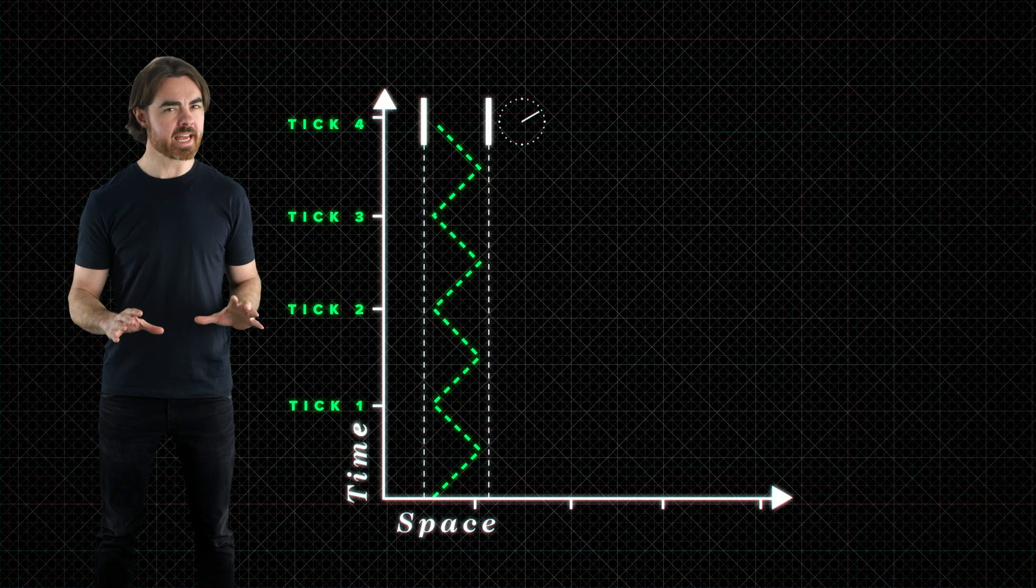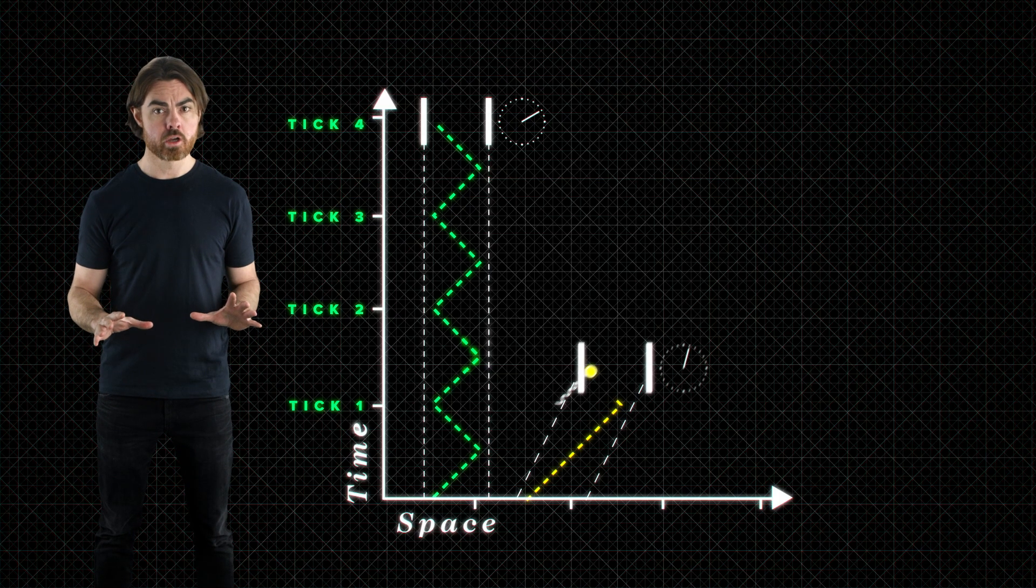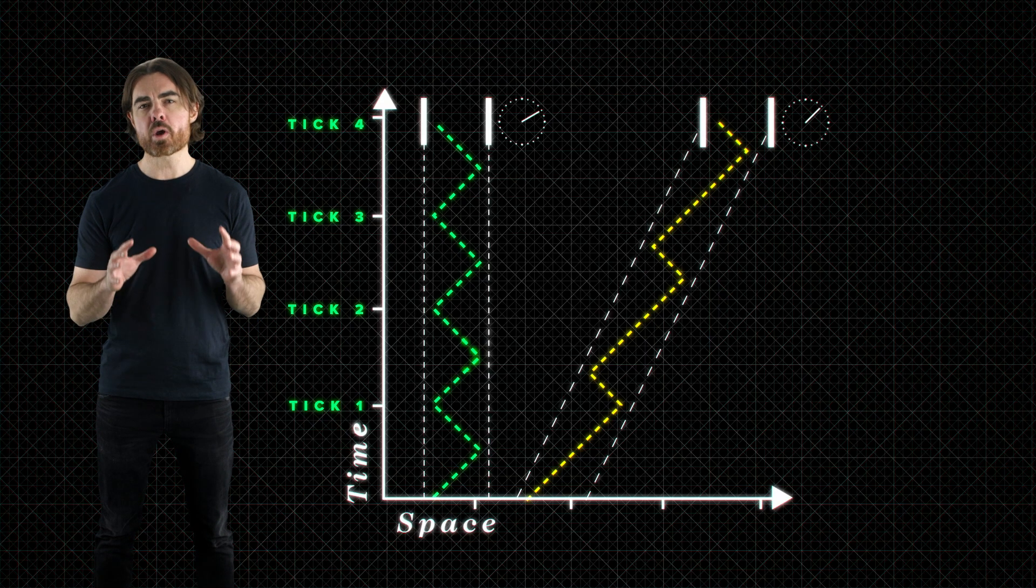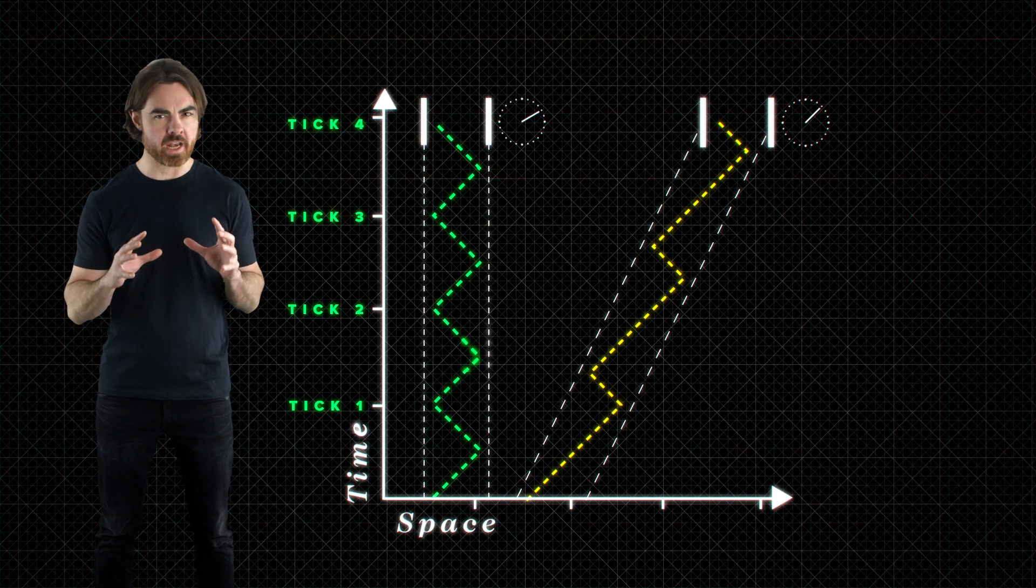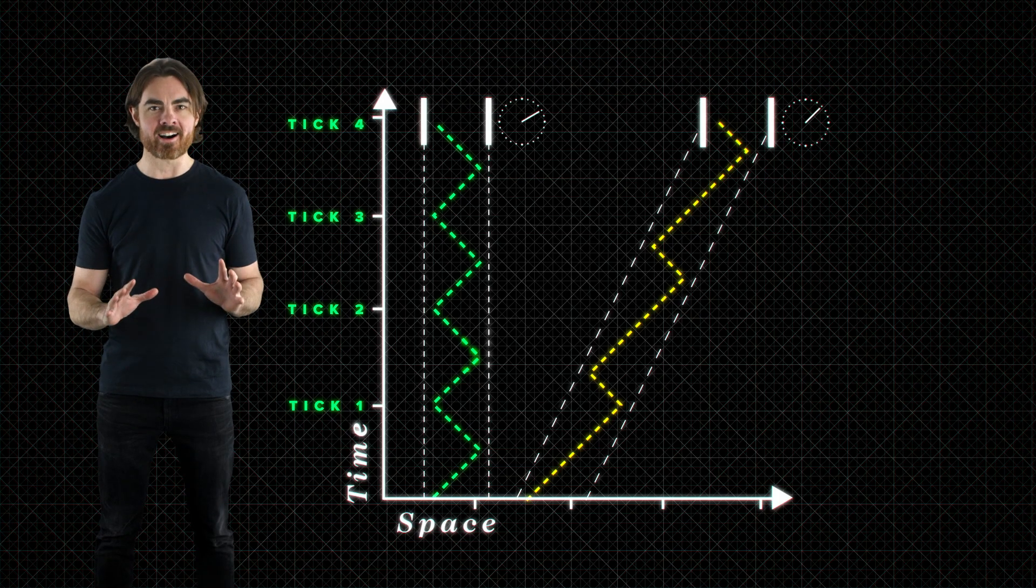However, the internal photon still has to travel those 45 degree light-like paths, because photons can only travel at the speed of light. A second photon clock, with a constant speed with respect to the first, travels a steeper, time-like path. This is where that whole invariant speed of light thing gets really interesting.